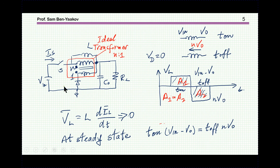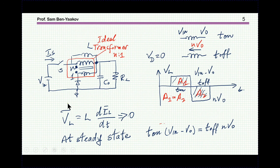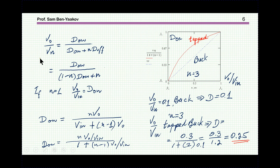Looking at the voltage across the inductor: during the on time we have V_in on one side and V_out on the other. During the off time, the output is connected to the secondary reflected to the primary, so it will be N times V_out. On one side we have V_in minus V_out, on the other we have N·V_out. These areas must be equal to obtain zero average voltage. Dividing by the period gives D_on and D_off.